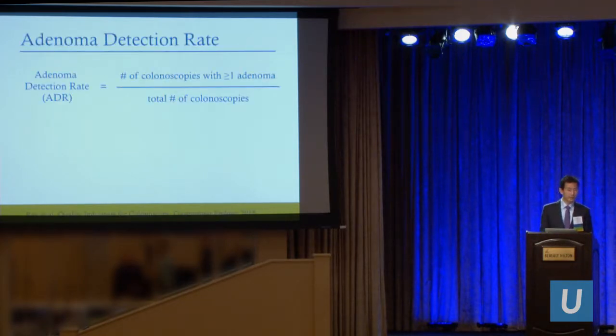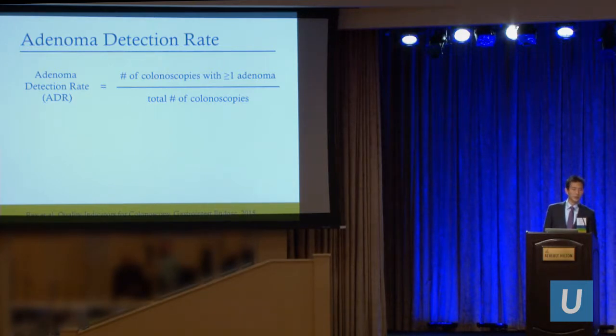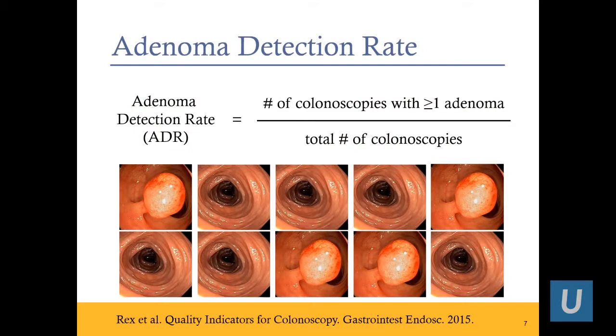The ADR is defined as simply the number of colonoscopies with at least one adenoma over your total number of colonoscopies — a pretty simple calculation. For example, in a morning session you do 10 colonoscopies, and on four of the patients you find an adenoma — not just a hyperplastic polyp, but an adenoma — your ADR would be 40%.